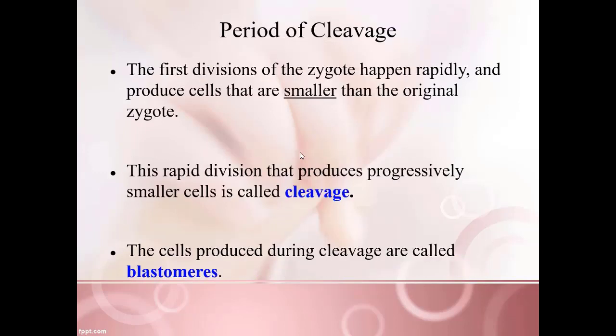The first part of this process is the period of cleavage. The very first divisions of the zygote happen fairly rapidly, but they produce cells that are smaller than the original zygote. This rapid division that produces progressively smaller cells is called cleavage, and the cells produced during this time are called blastomeres.